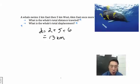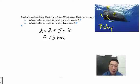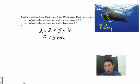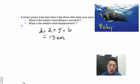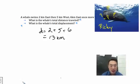Now for our total displacement, it's a little bit different because, as you should know from the other videos, displacement is the distance between your starting point and your ending point — a straight line between your starting point and your ending point. There are two ways of doing this: the mathematical way and the drawing method, where we draw vectors and figure it out that way.